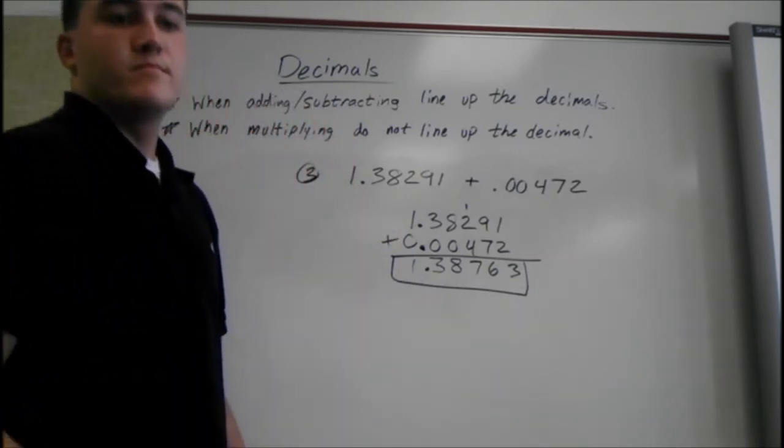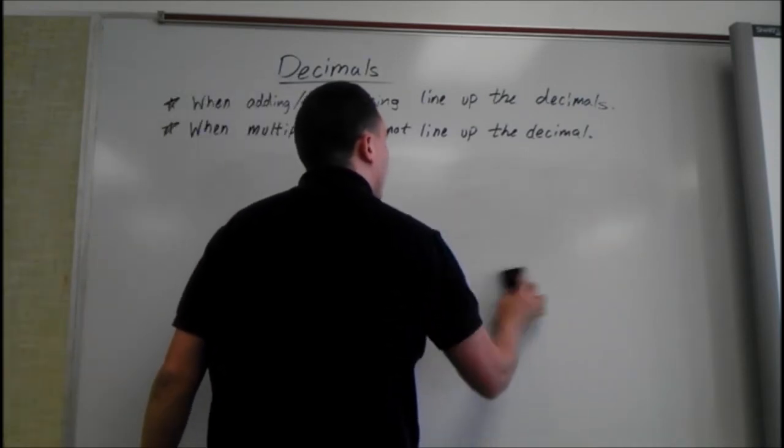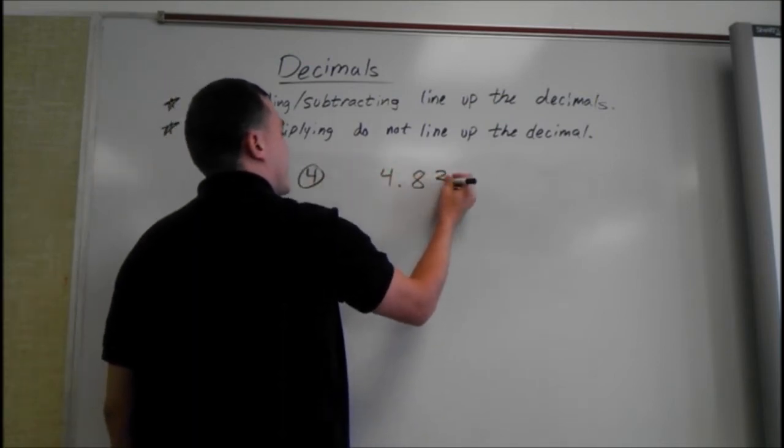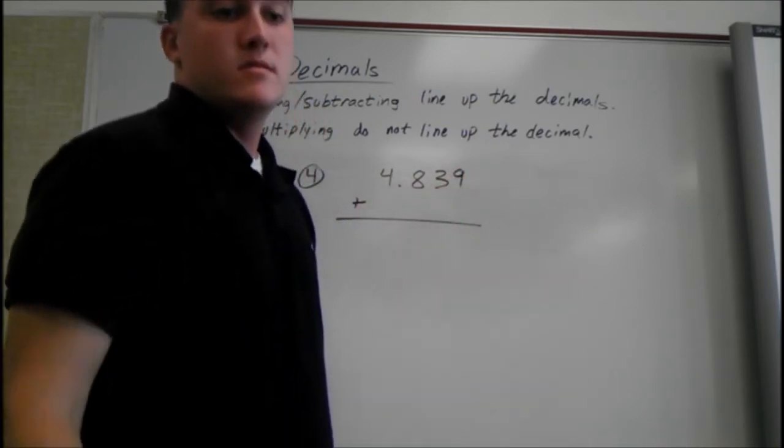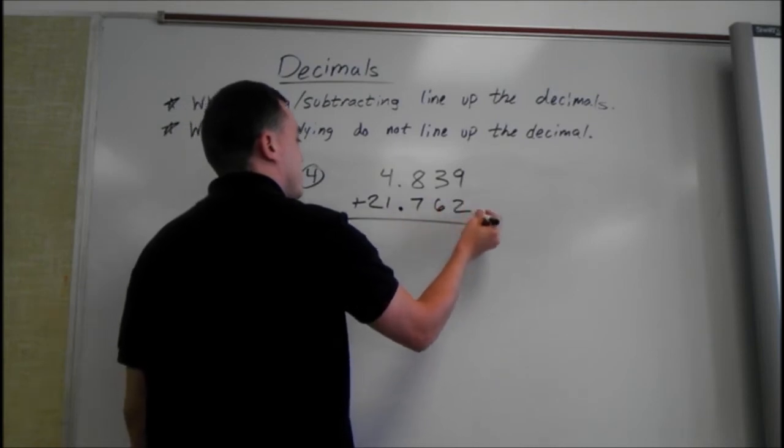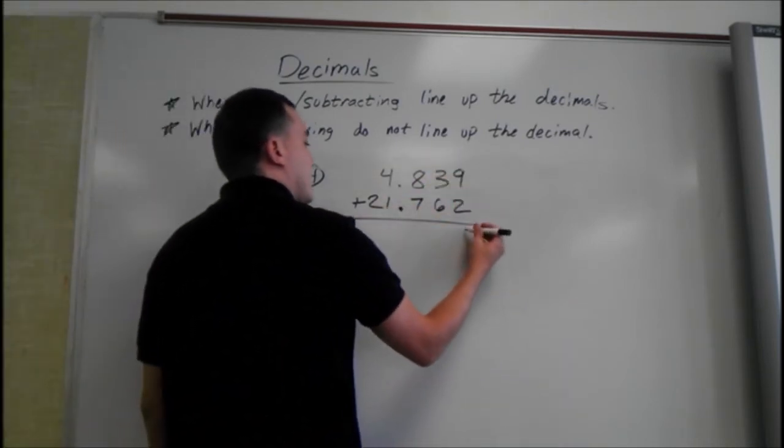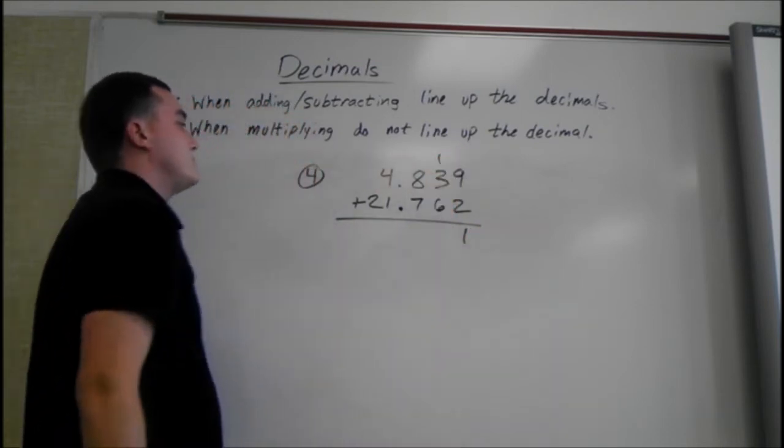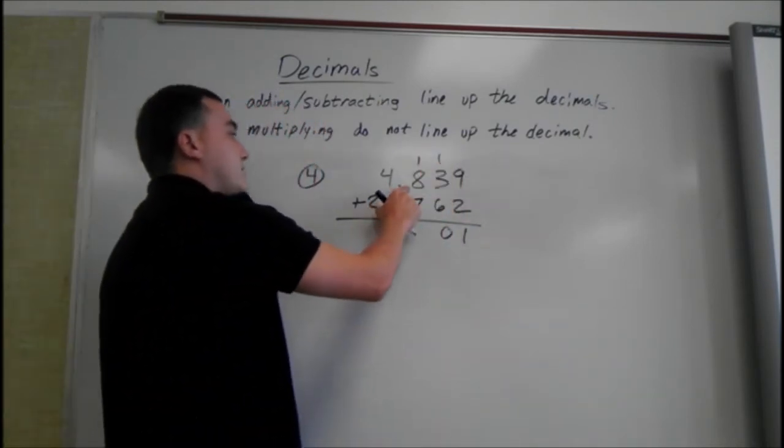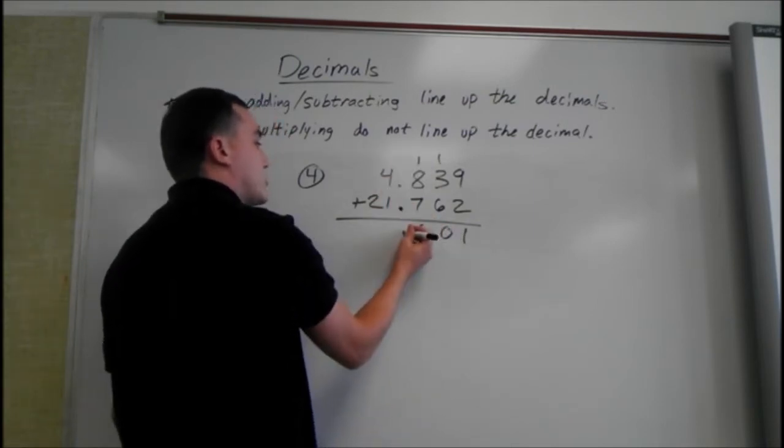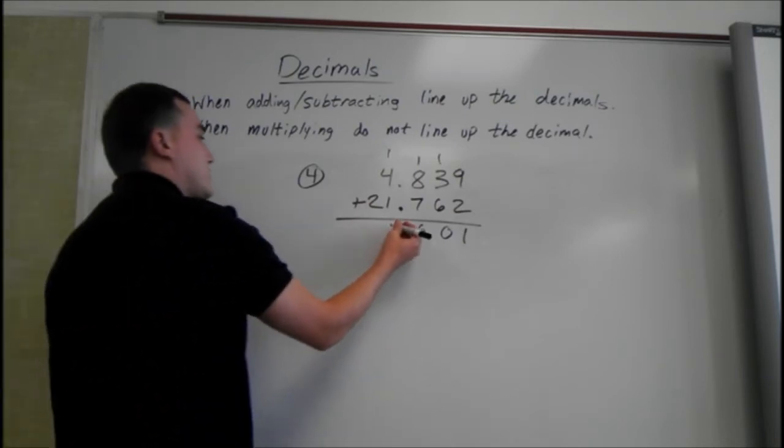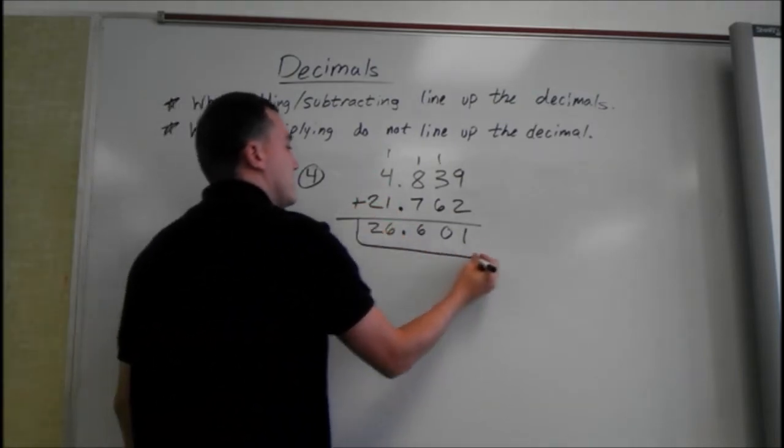Another one. We have 4.839 plus 21.762. Make sure you line up the decimals. 9 plus 2 is 11, so 1 goes down here, 1 comes up. 6 plus 3 plus 1 is 10, so we put a 0 here and the other one goes up there. 7 plus 8 is 15 plus 1 is 16. Decimal drops down. 1 plus 4 plus 1 is 6, and the 2 will drop down as well.